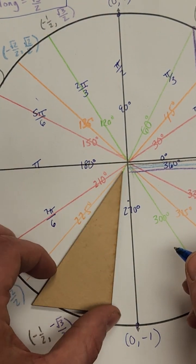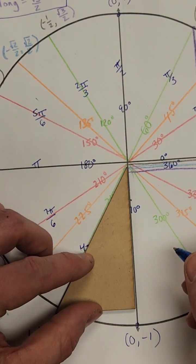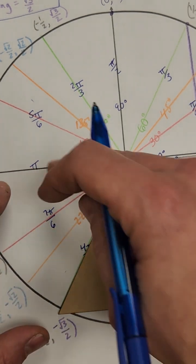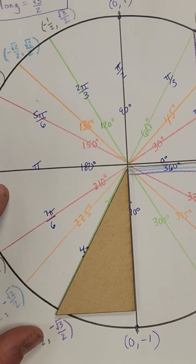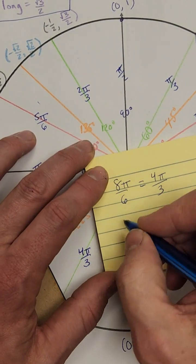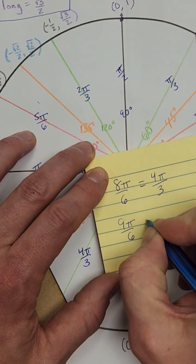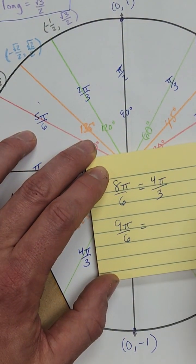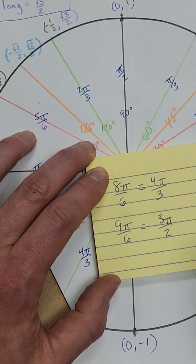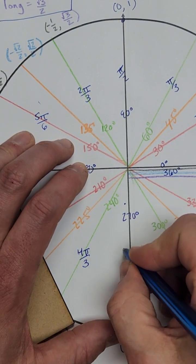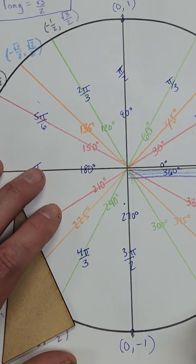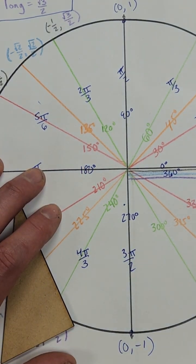That was our eighth sixth, so this would be the ninth. This would be our ninth sixth because we're breaking up this bottom part into sixths as well. So nine π over six — three goes into both of those — so that reduces to 3π/2. That would be three halves π, or 3π/2 radians.